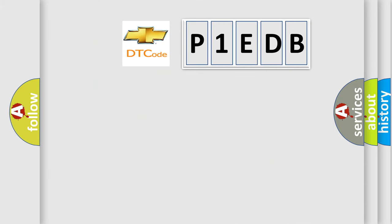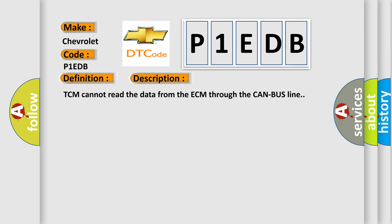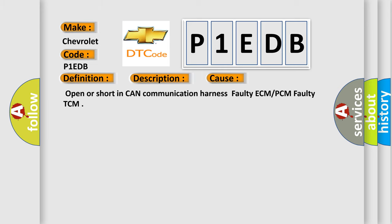So, what does the Diagnostic Trouble Code interpret specifically for Chevrolet car manufacturers? The basic definition is TCM lost communication. TCM cannot read the data from the ECM through the CAN bus line. This diagnostic error occurs most often in these cases: open or short in CAN communication harness, faulty ECM or PCM, or faulty TCM.